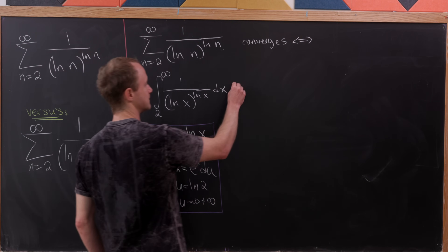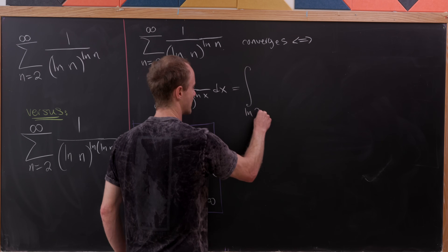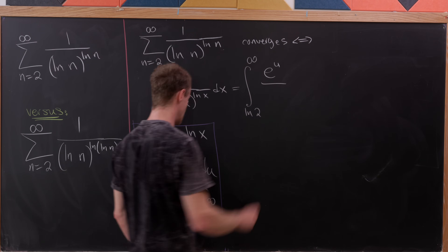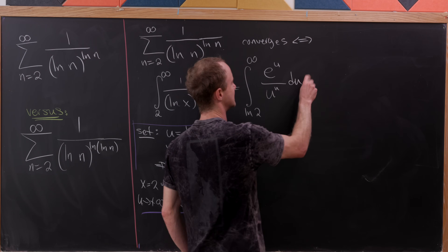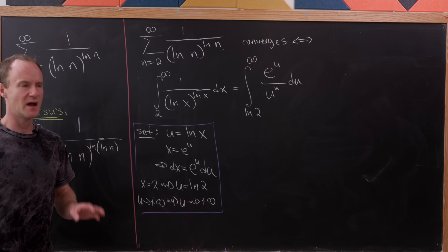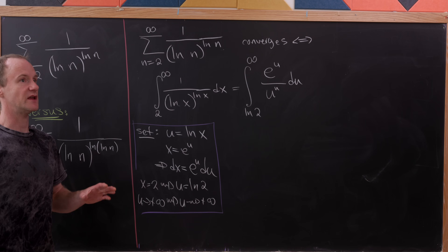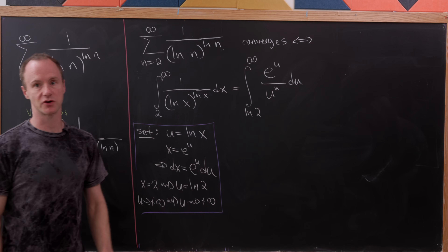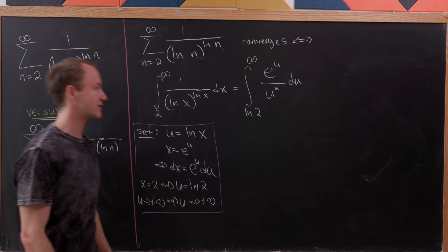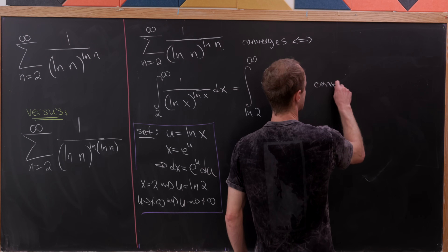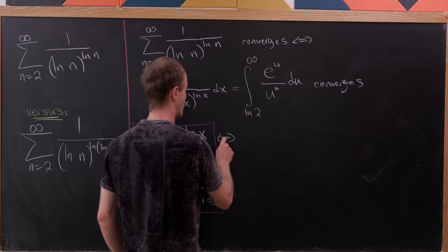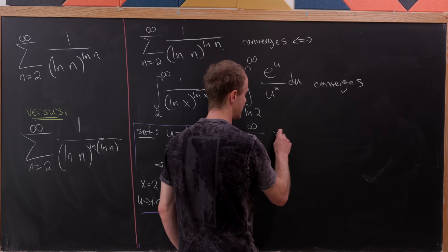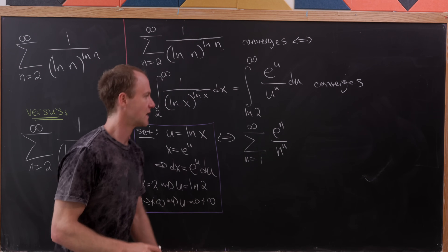That gives us the integral from log(2) to infinity of e^u over u^u du. Now I'm going to essentially reverse the integral test and instead test if this integral converges by determining if a corresponding series converges. This integral converges if and only if the sum as n goes from 1 to infinity of e^n over n^n converges.